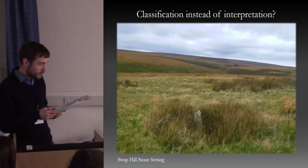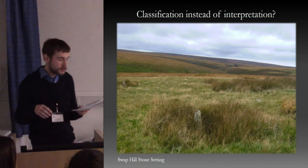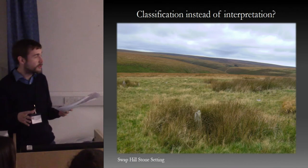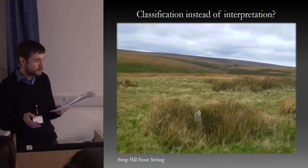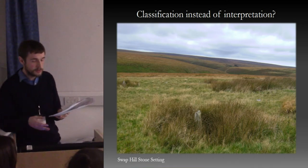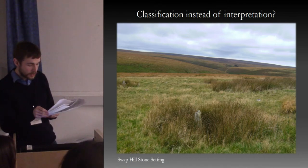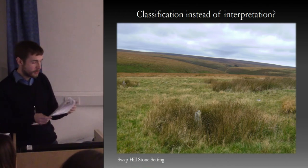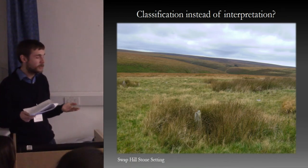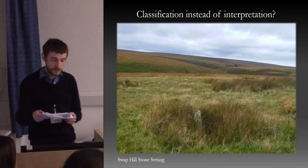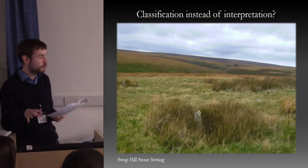The interpretation of monumentality on Exmoor has been to some extent stifled by a classification scheme which does not adequately account for the variation evident in the form of Exmoor's stone settings. One gets the impression that any variation from the identified forms can be explained away as damage to the sites, which, due to their small size, is admittedly a constant problem. Turning this classification into a true typology was not really attempted by Chanter and Worth, most likely because of the total lack of dating evidence, and this lack continues to hamper any attempt to understand the chronology of the sites.